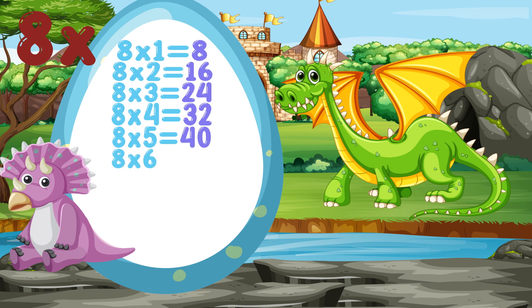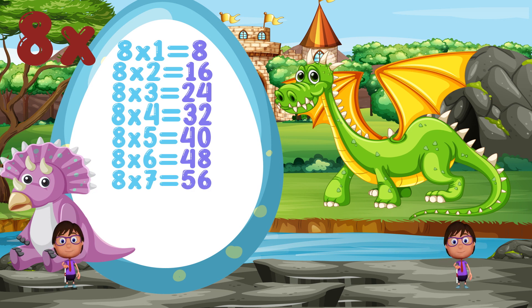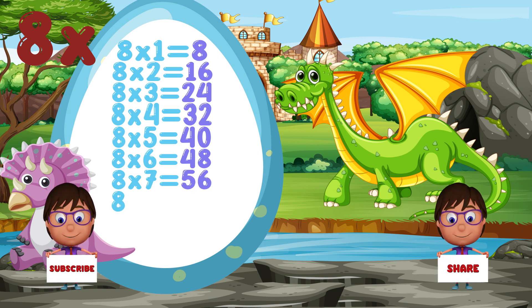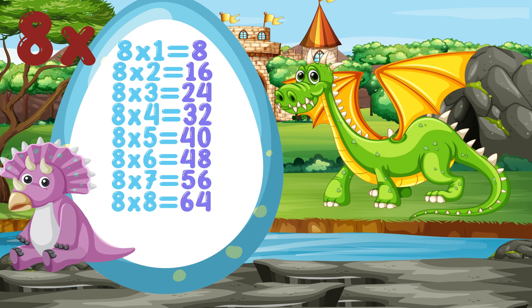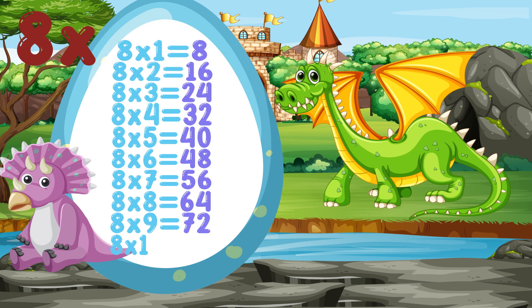8 times 6 is equal to 48. 8 times 7 is equal to 56. 8 times 8 is equal to 64. 8 times 9 is equal to 72. 8 times 10 is equal to 80.